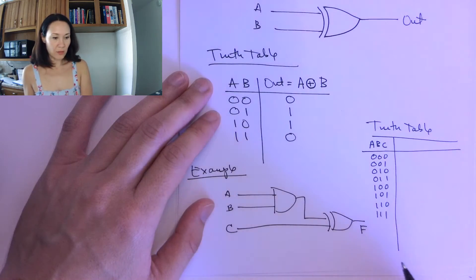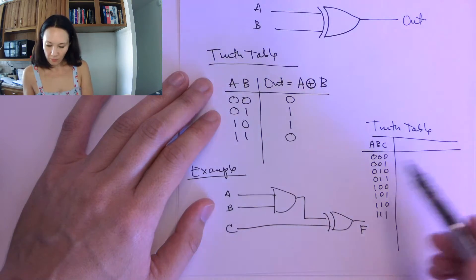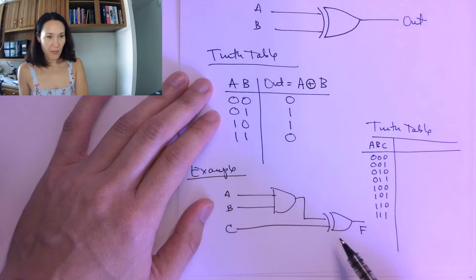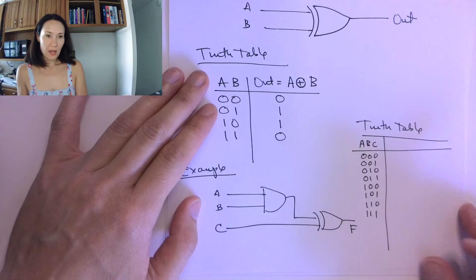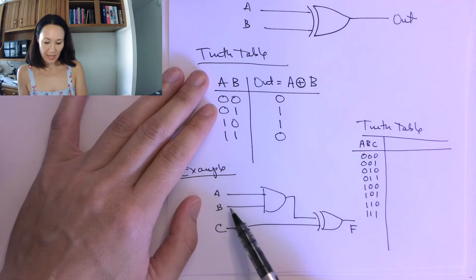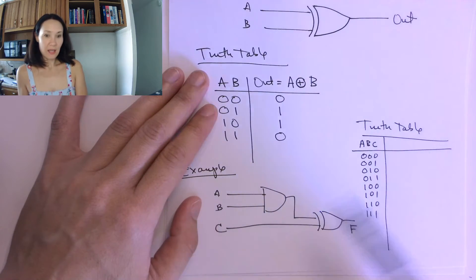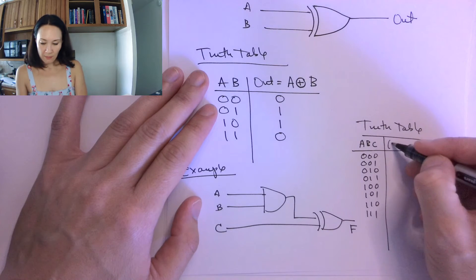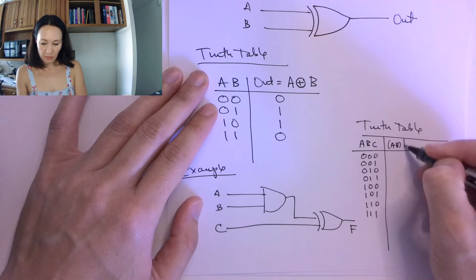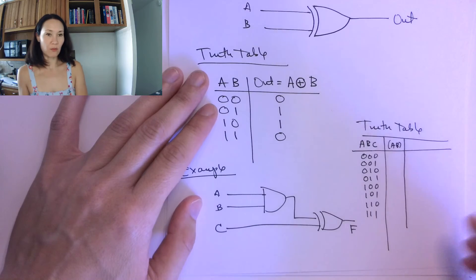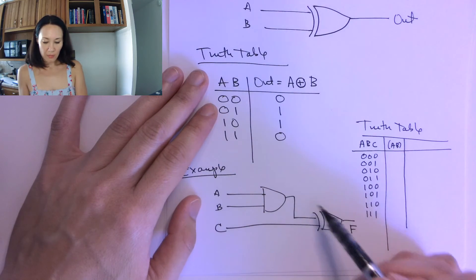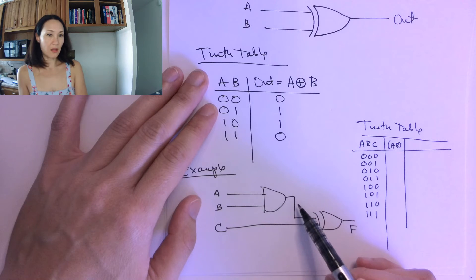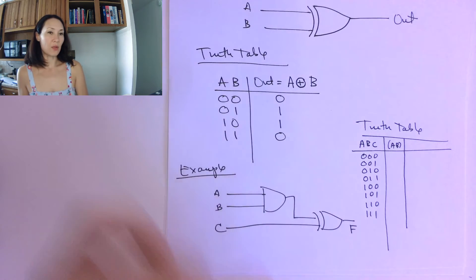Now the first thing that I want to do when I have compound circuits like this is I like to make intermediary steps in my truth table. So the first thing that happens is A and B come in and they get ANDed. So I actually put an A AND B column in my truth table so I can refer to that later. So after I evaluate A AND B, then I'll know what's on this line for all of my inputs A, B, and C.